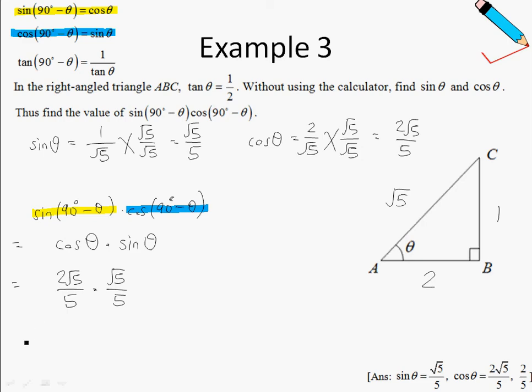Sine theta is root 5 over 5. Okay, I'm multiplying this together, using your calculator, we will just end up with 2 fifths. Okay, and that's all for example number 3.